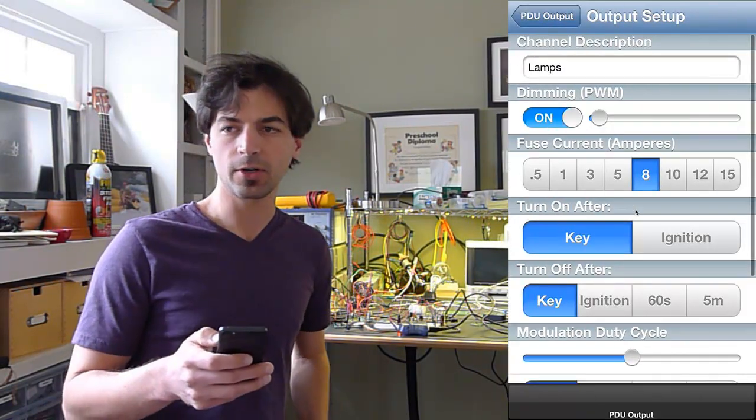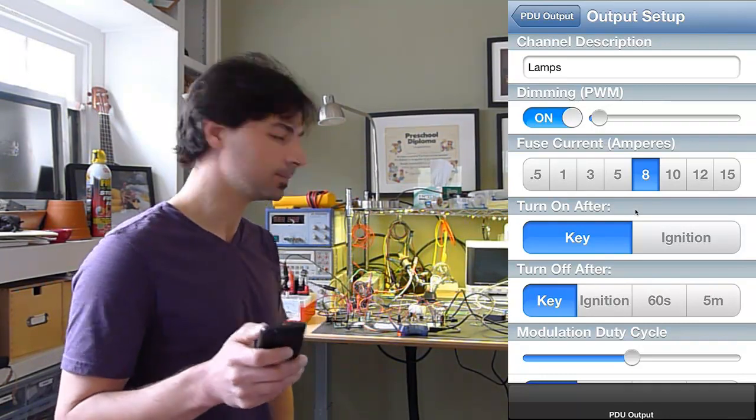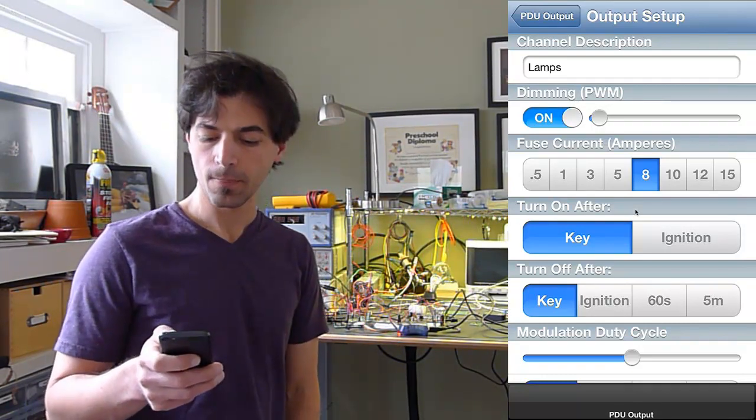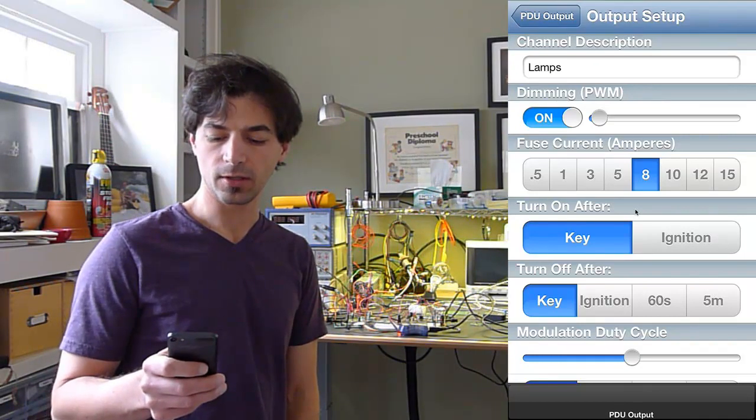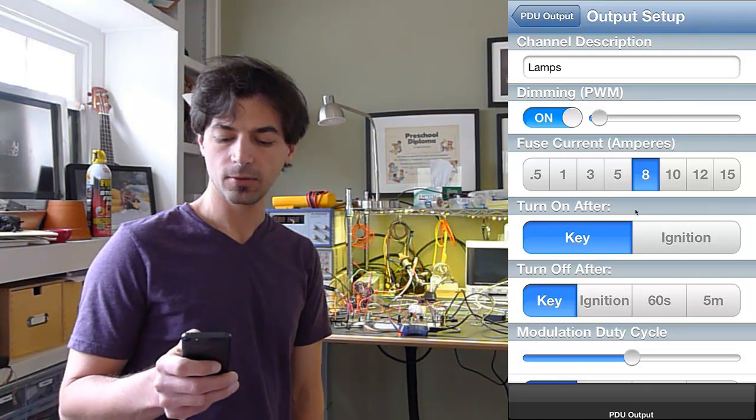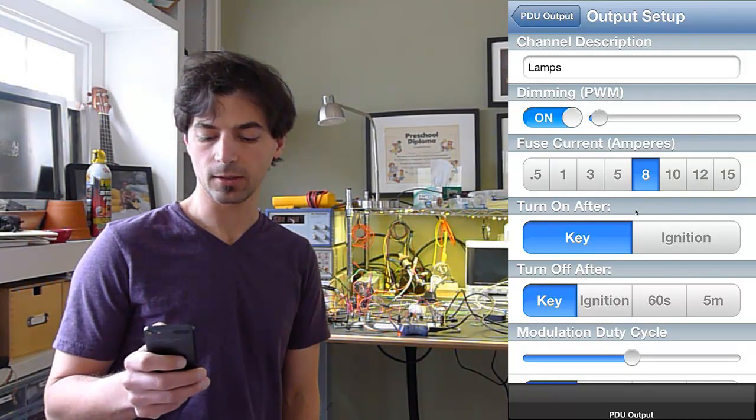Let's go through some of the programming features here. These are very initial, so we'll do more with it later. But you can name the channel here at the top. You can adjust the PWM for each channel, plus you can say I don't want any PWM by clicking that.